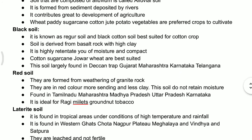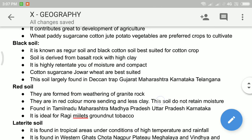Black soil is created due to the weathering of basalt rock, with high clay content. It is highly retentive of moisture and very compact. Some very important crops that can be cultivated in this soil are cotton, sugarcane, jowar, and wheat. One very important characteristic is that it has a retentive capacity, which means it holds moisture for a longer period of time.